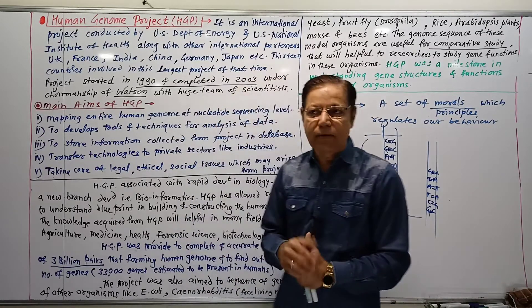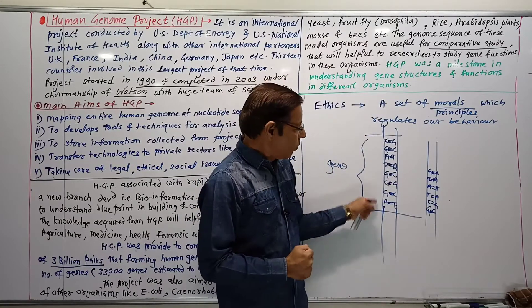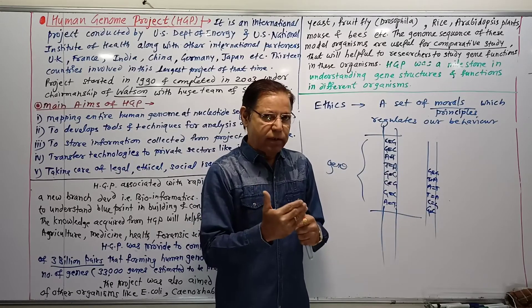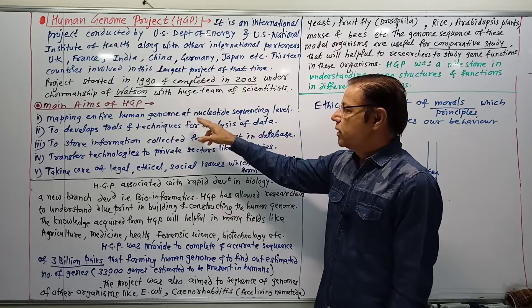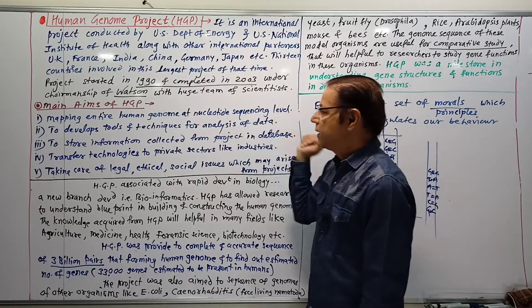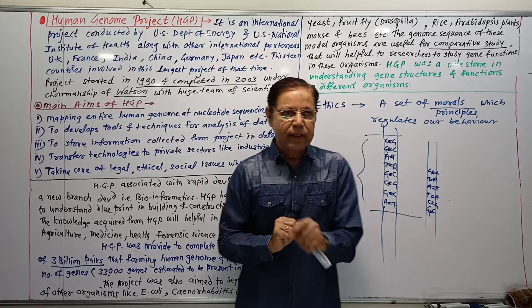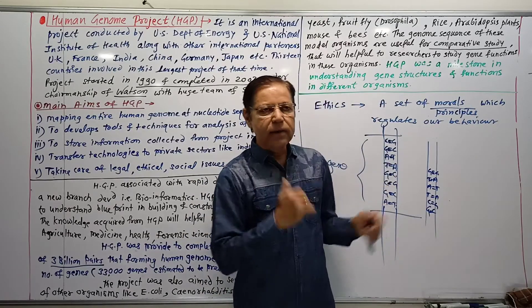This is the sequencing to identify what is the sequence of each and every gene. The main aim of this project is mapping the entire human genome at nucleotide sequencing level—the position of genes on the chromosome and the sequence of genes on the chromosome. This comes under structural genomics and understanding the function of that gene.